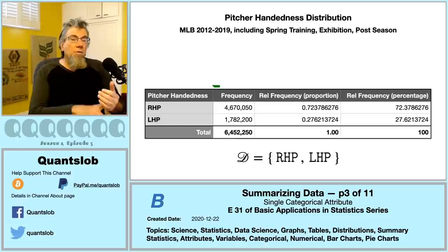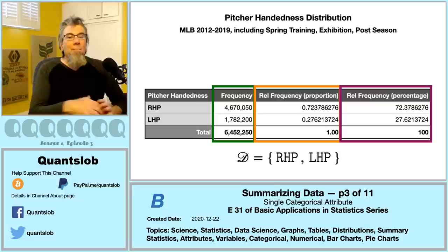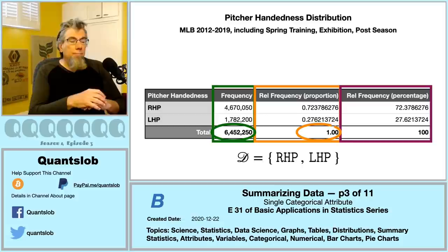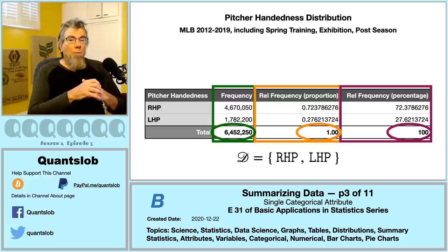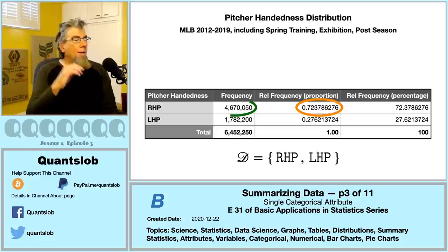When we sum up the frequencies across all categories, we get the total number of pitches. Summing the proportion relative frequencies gives one, and summing the percent relative frequencies gives 100. Sometimes, especially when there are many categories, the actual sum of individual proportions and percents in a table may not exactly equal one and 100 respectively, because of decimal rounding. To calculate a category's proportion, we divide its frequency by the total frequency — this calculation applies whether we're performing descriptive or inferential statistics.